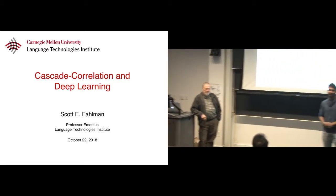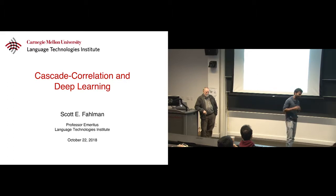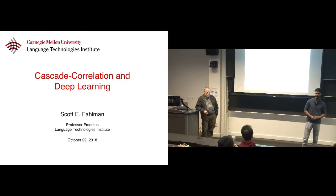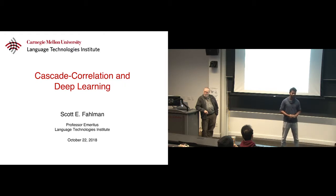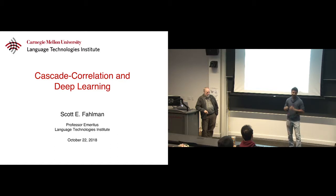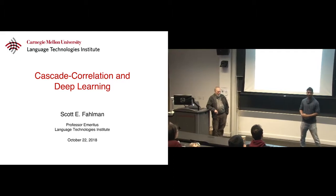I'm going to introduce Professor Scott Fahlman. Professor Scott has got a number of seminal contributions in the area of artificial neural networks, including but not limited to QuickProp. All this while we assume that we know an architecture for neural networks, but Professor Scott is going to be talking about how to build neural architecture from scratch.